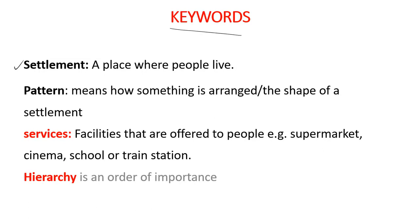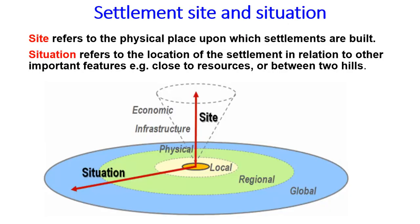Some of the keywords we need to look at: settlement is a place where people live. Pattern means how something is arranged — the shape of a settlement is its pattern. Services are facilities offered to people, which include supermarkets, cinema, school, and train station. Hierarchy is the order of importance of a settlement.